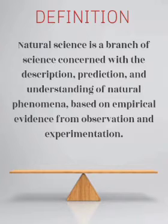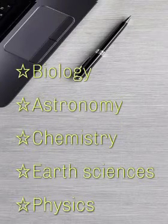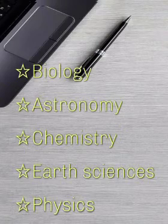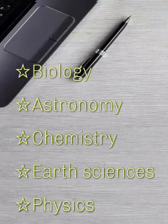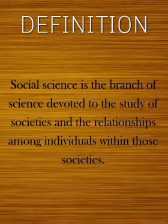The main part of the science is in the empiricality of evidence by either observation or experimentation. Natural science is a branch of science that deals with the physical world. The major sub-branches of natural science are biology, astronomy, chemistry, health sciences, and physics.